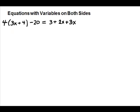Here's an equation with a variable on both sides that also requires some simplifying. First we'll work on the left-hand side and distribute the 4, which gives us 12x plus 16. The parentheses come off. Then we have like terms on that side — the 16 and the minus 20 can go together.